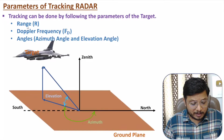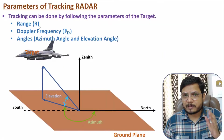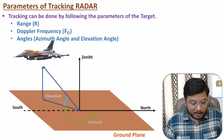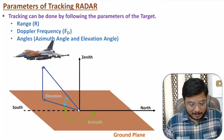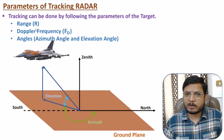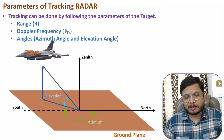The first parameter is range. Range is physical distance. If we have a target and at center we have the radar system, then the distance of this radar system with respect to the target is the range. Based on range, we can track the target.